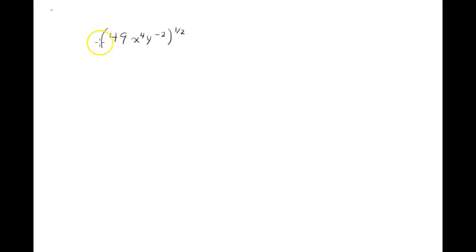When you have an entire expression raised to an exponent, or some factors raised to an exponent, you can apply that exponent to each of the factors. So I'm going to do that here. I'll say that is 49 to the one-half multiplied by x to the fourth to the one-half multiplied by y to the negative two to the one-half.